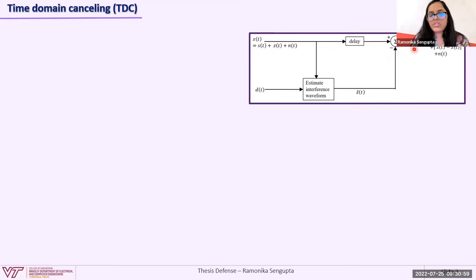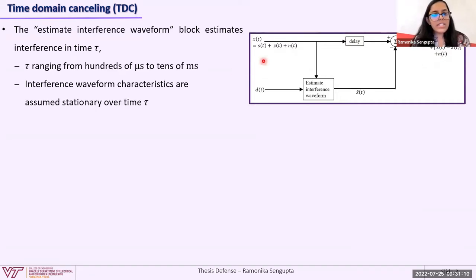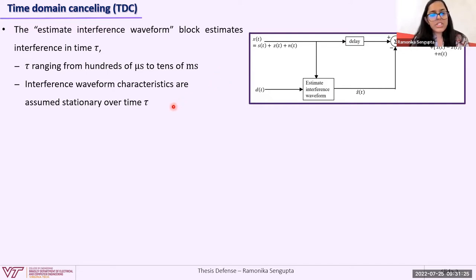The comparison is used to get an estimate of the interference Z-hat, which is subtracted from X to give the output Y. Ideally, this process should completely remove the interference — that means Z should equal Z-hat — while preserving the signal of interest and the noise. I'll now explain the state of the art in TDC and its limitations. The estimate interference waveform block estimates interference over a time tau, which in existing work ranges from hundreds of microseconds to tens of milliseconds. Interference waveform characteristics are assumed stationary over this time tau.